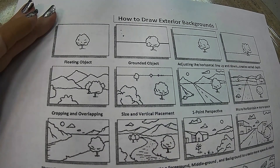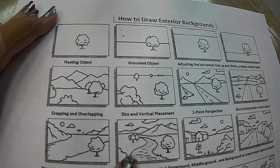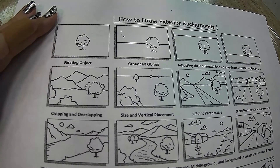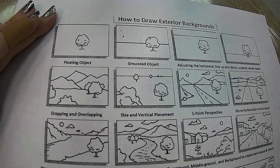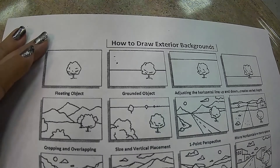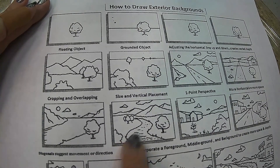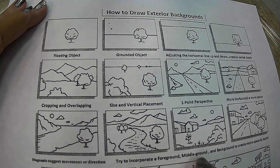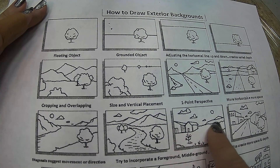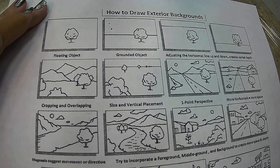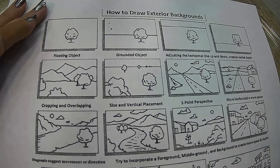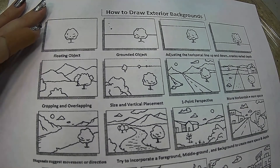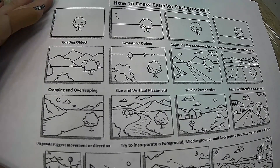Try to incorporate a foreground, middle ground, and background to create more space and depth. The foreground — think 'f' for front — is the stuff we see up close, like this rock and this tree. The midground is the middle of the paper, like these little houses. The background is things we see really far away, like mountains and clouds. Having a foreground and background instead of drawing everything in one area will make your space look like it has a lot of depth.